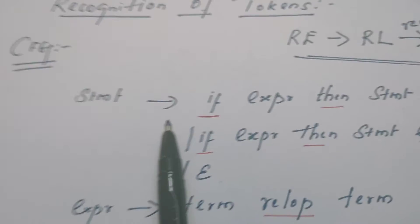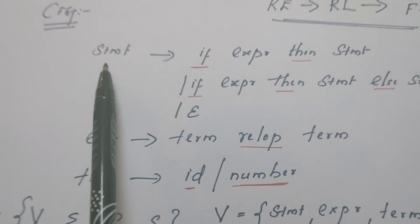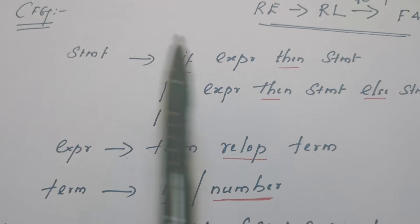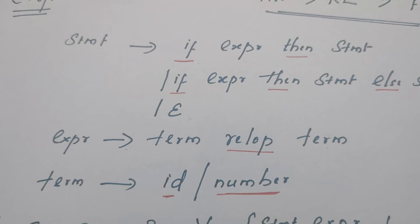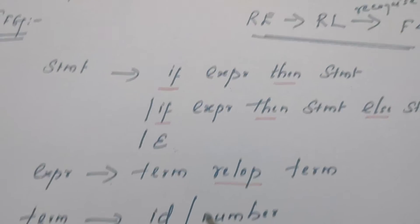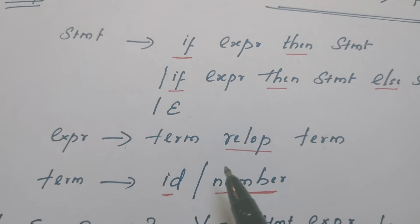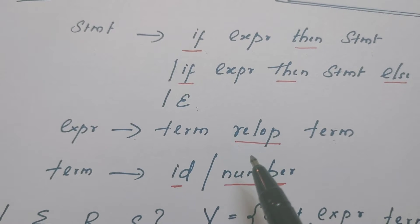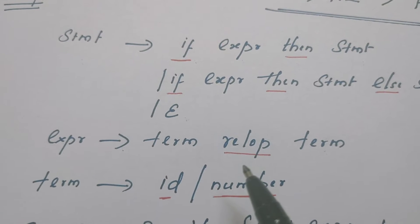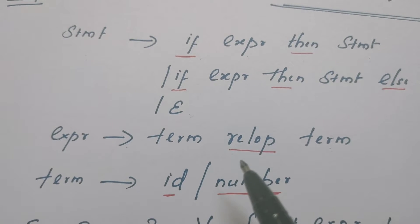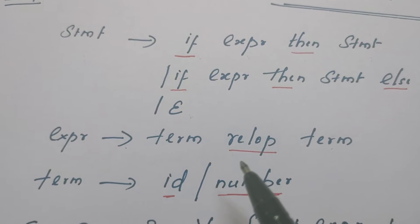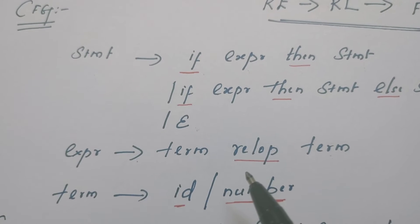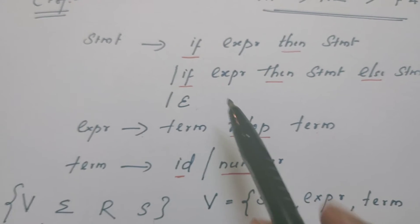Normally every rule is defined with a variable on the left-hand side of the arrow mark, and on the right-hand side we have a combination of one or more variables and terminals, as per the definition of context-free grammar. I have already made a video about context-free grammar — I'll give the link in the description box.